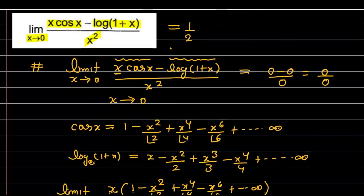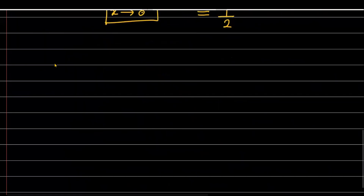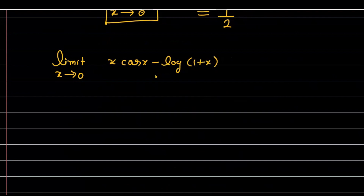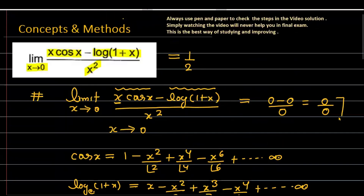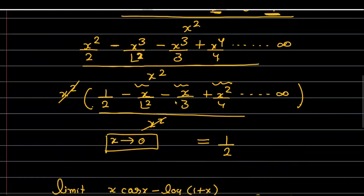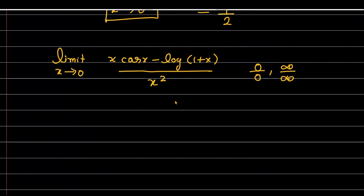So that was one method to calculate the limit of the function. But as I mentioned, you can also apply L'Hôpital's rule to this question. Let me note the question once more: limit as x tends to 0 of x·cos(x) minus log(1+x) (base e), divided by x². The requirement for L'Hôpital is that the function must be in 0/0 form or infinity/infinity form. I showed at the start that this function is in the 0 upon 0 format.